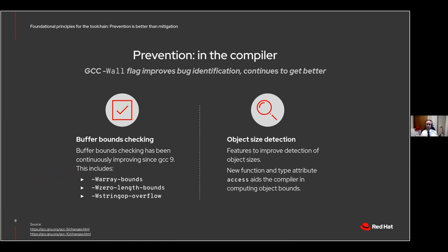Let's talk about prevention in the compiler. Generally there are two important things: buffer bounds checking and object size detection. Buffer bounds checking has been continuously improving since GCC 9 — array bounds, string operation overflows — because bounds checking lets us look at whether you've overwritten those bounds. Object size detection is also important, and a key piece of it is marking up runtime headers with specific access attributes, allowing the compiler when compiling a C or C++ application with those headers and new markup to give better results when looking at warnings for your code.